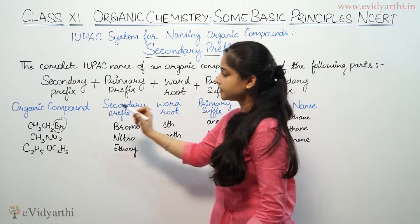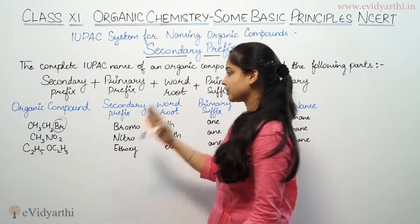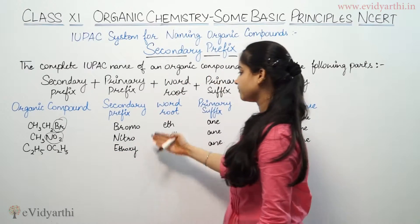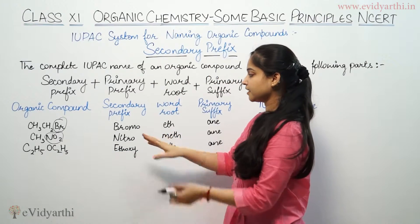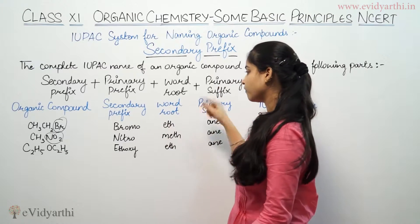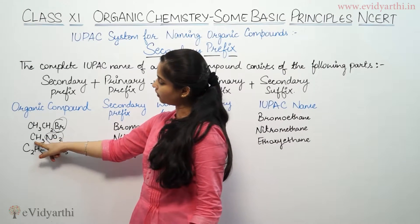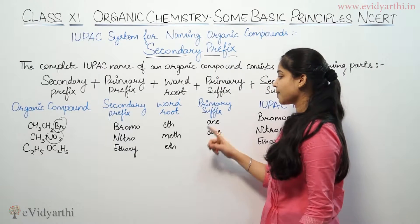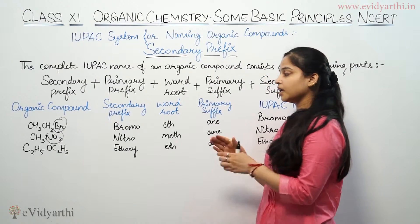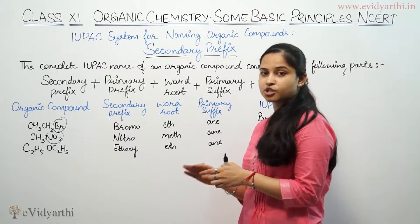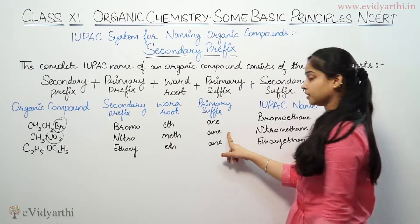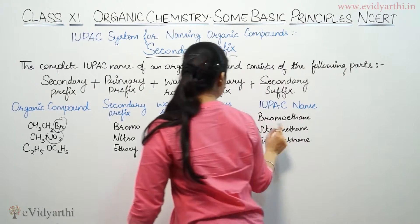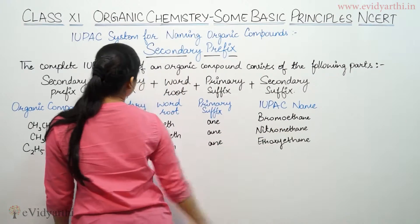Second example: CH₃NO₂. The secondary prefix in this organic compound is NO₂. The secondary prefix name for NO₂ is nitro. The word root: this compound has only one carbon atom, so the word root is meth. The primary suffix is ane, because it has no double bond or triple bond — it is a saturated compound. So the IUPAC name is nitromethane.